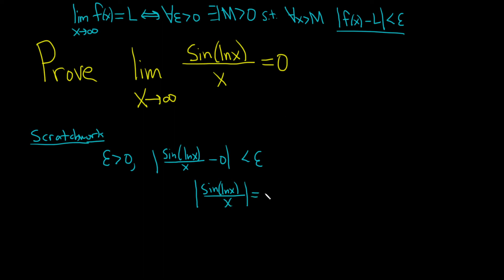But watch this. There's a property of absolute values that says you can do this. This is the absolute value of the sine of ln x over the absolute value of x. And now we get to use a really beautiful fact about the sine function. The sine function is bounded by one. That means that it's less than or equal to one in absolute value. The ln x doesn't matter, right? It doesn't matter what's there.